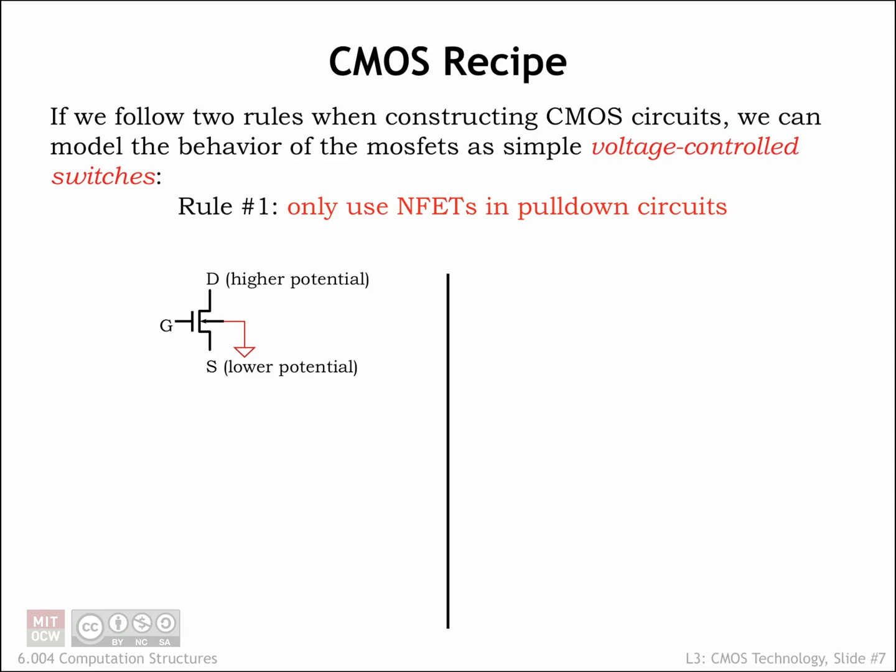Now that we have some sense about how MOSFETs function, let's use them to build circuits to process our digitally encoded information. We have two simple rules we'll use when building the circuits, which, if they're followed, will allow us to abstract the behavior of the MOSFET as a simple voltage-controlled switch.